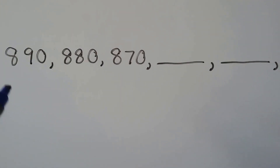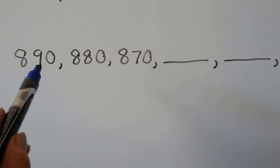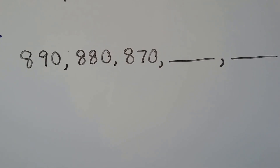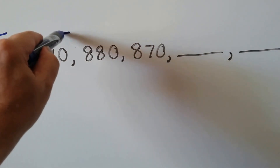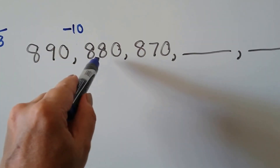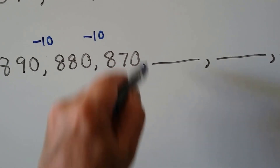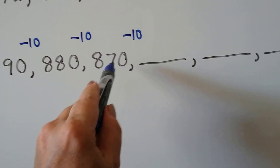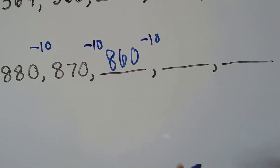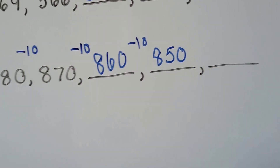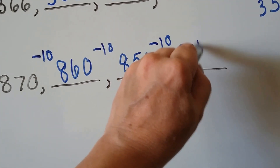Let's figure out this pattern: 890, 880, 870. The hundreds are staying the same, but the tens place is going down by 1 — that means it's minus 10. 890 minus 10 is 880, minus 10 is 870. So the pattern is minus 10. 870 minus 10 is 860, minus 10 is 850, minus 10 is 840.